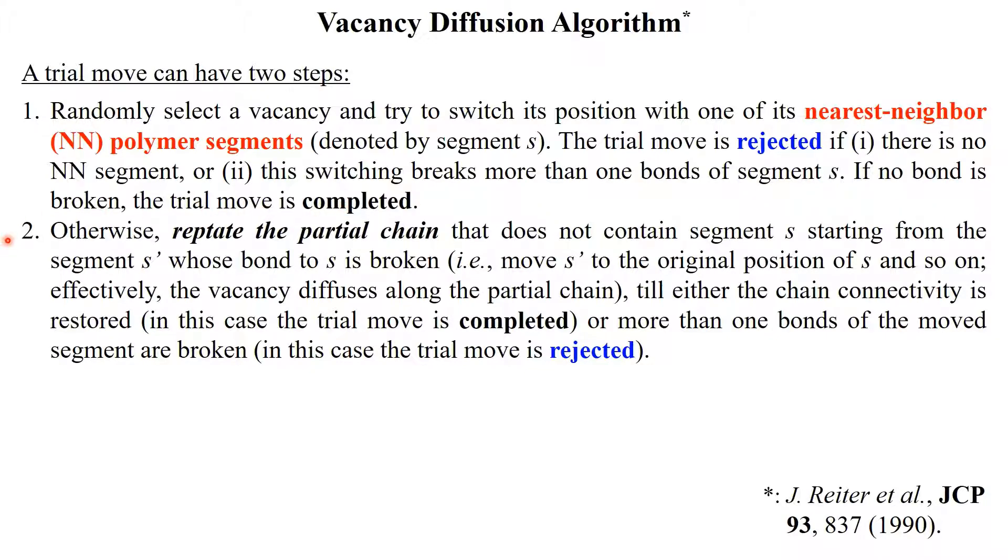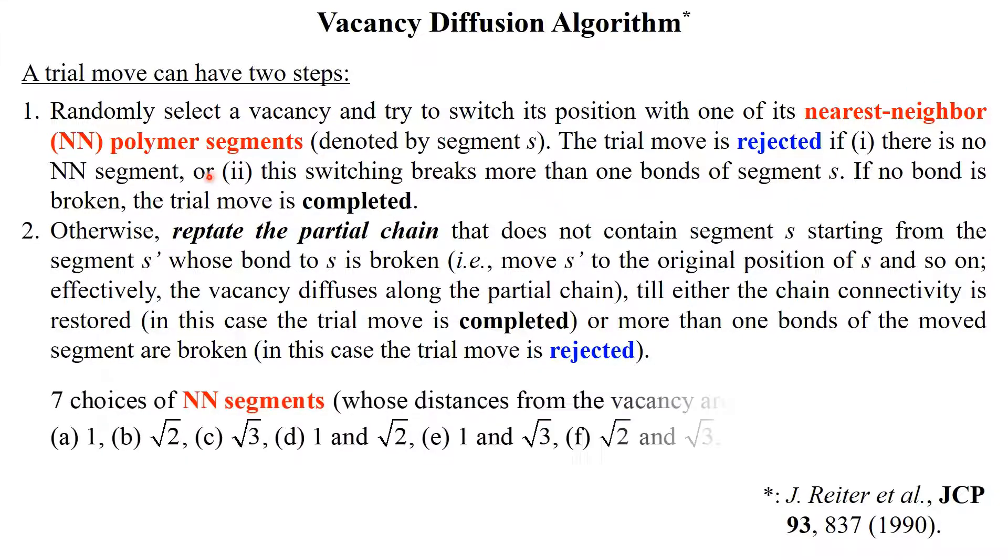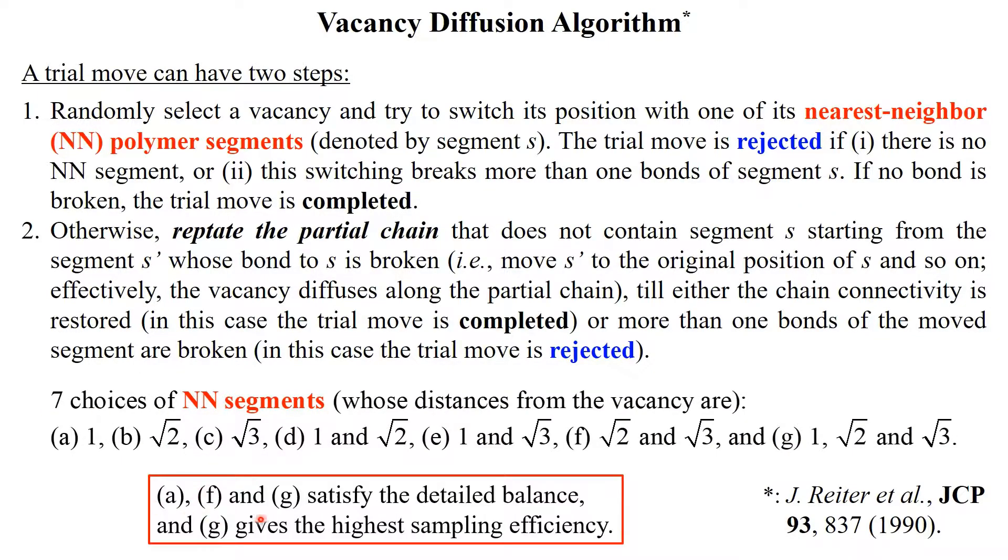Only when one bond of s is broken do we proceed to the second step, where we reptate the partial chain that does not contain segment s to make the vacancy diffuse along it, till either the chain connectivity is restored or more than one bond of the moved segment are broken. So, the key of this algorithm is to choose the set of nearest neighbor segments of the vacancy. We consider seven different choices, A to G, and found that only A, F, and G here satisfy the detailed balance, and that G gives the highest sampling efficiency.